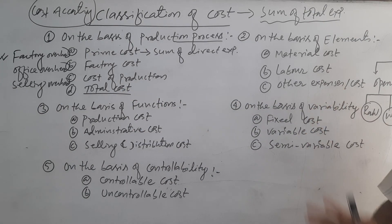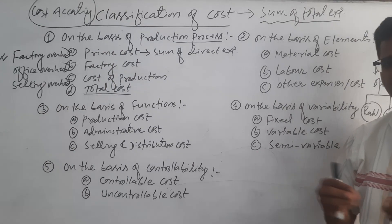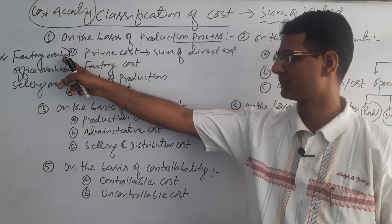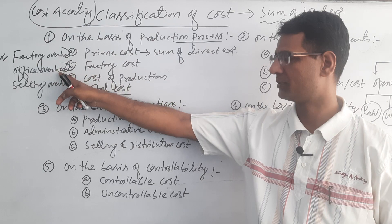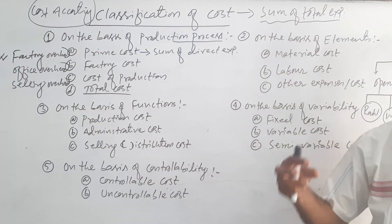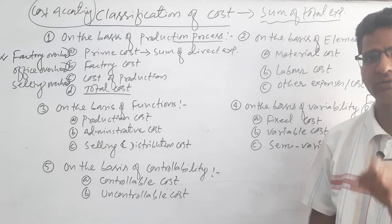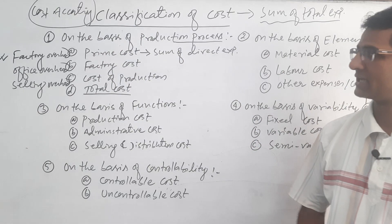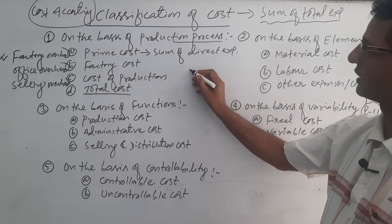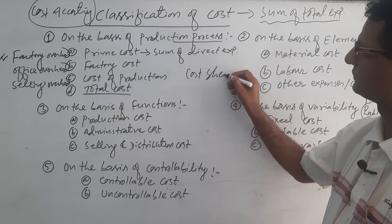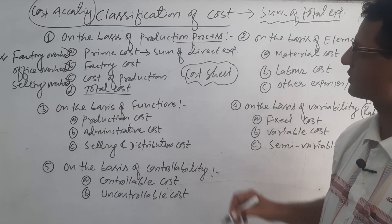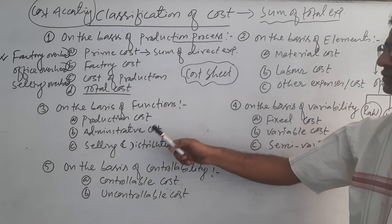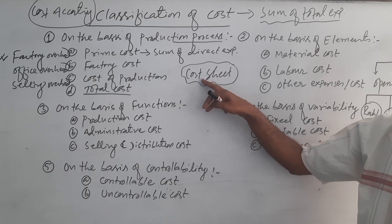On the basis of production process, we have to distinguish and determine the different costs and different expenditures on the basis of these overheads — factory overhead, office overhead, and selling and distribution overhead. Related expenses are recorded under the related overhead. This process is very important for preparing the cost sheet, which is the numerical part of cost accounting.